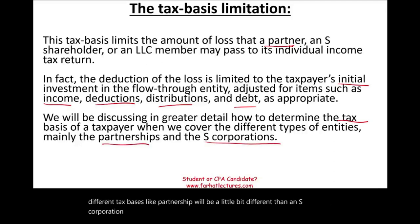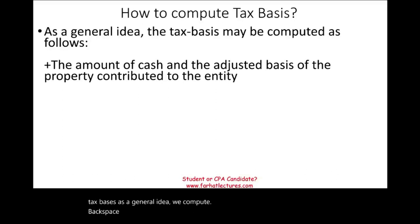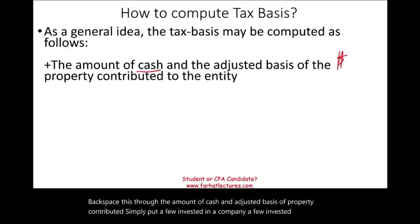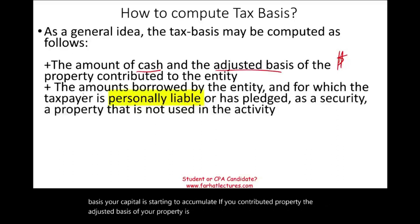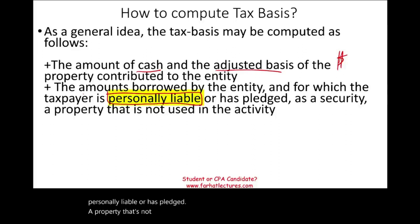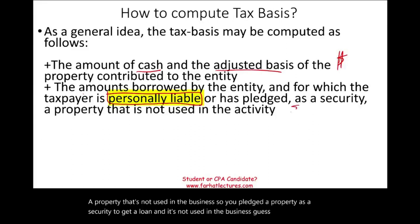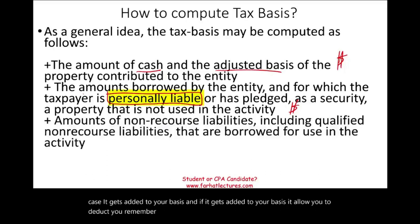As a general idea, we compute tax basis starting with the amount of cash and adjusted basis of property contributed. If you invested money or contributed property, its adjusted basis is added to your basis. Also, any amount borrowed by the entity for which the taxpayer is personally liable, or for which the taxpayer has pledged property not used in the business, gets added to your basis. Non-recourse liabilities — including qualified non-recourse liabilities borrowed for use in the activities — also increase your basis.